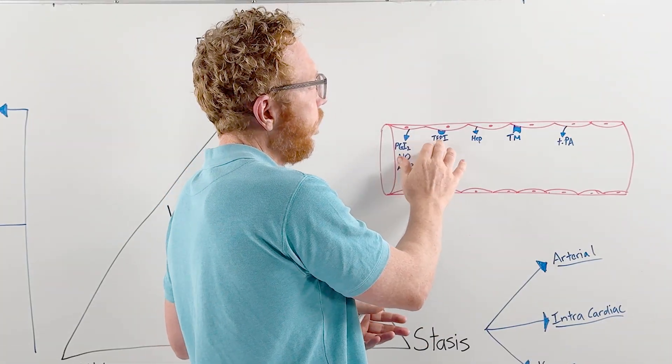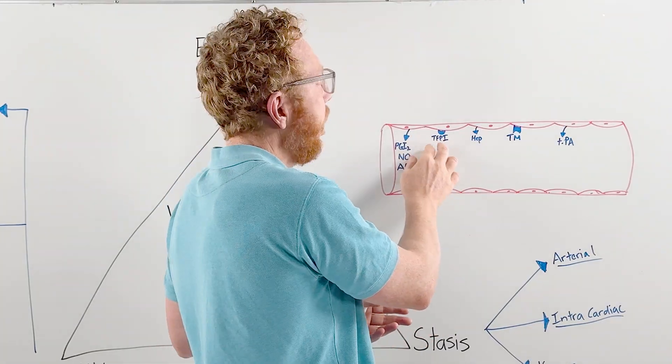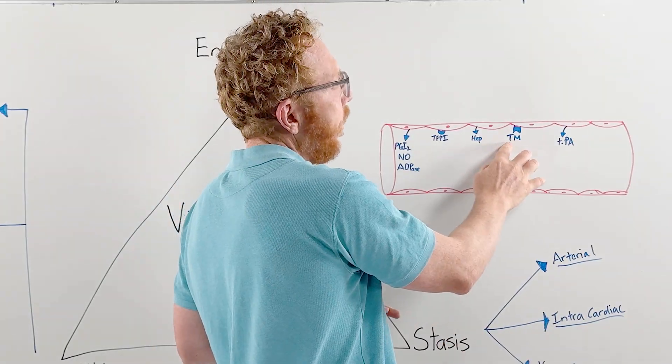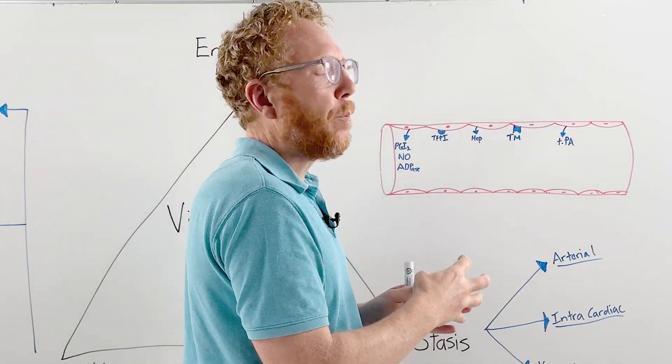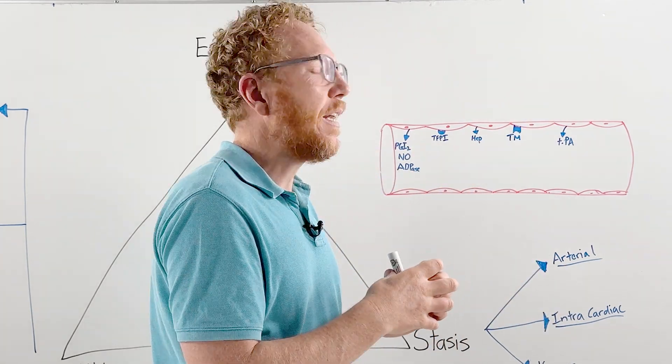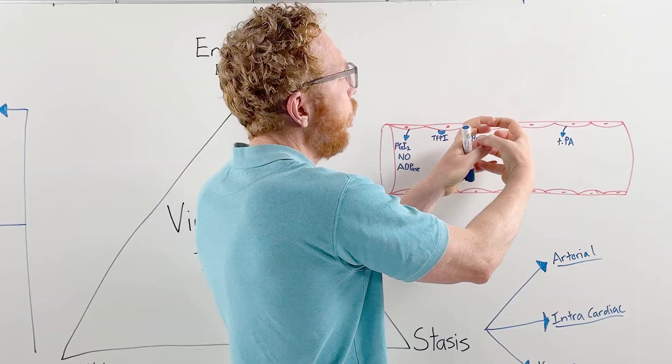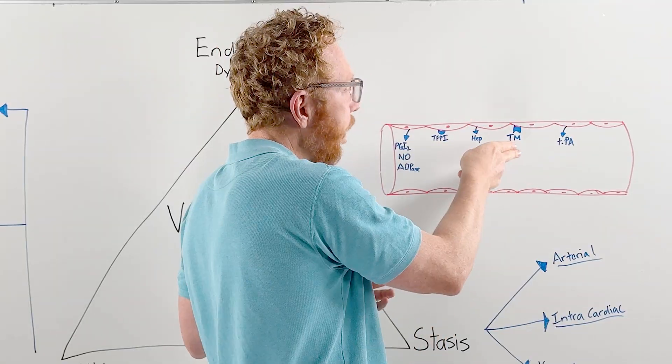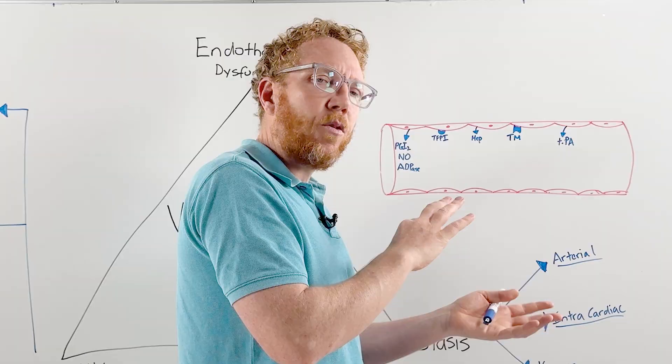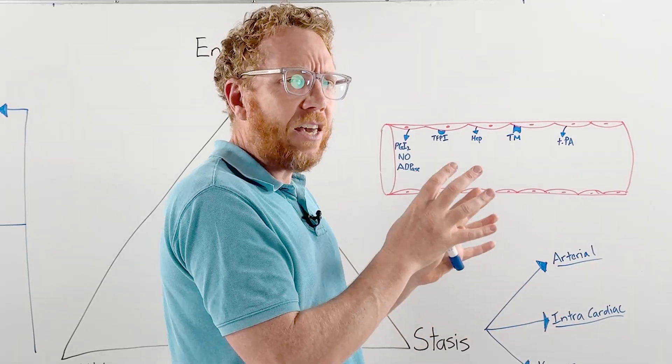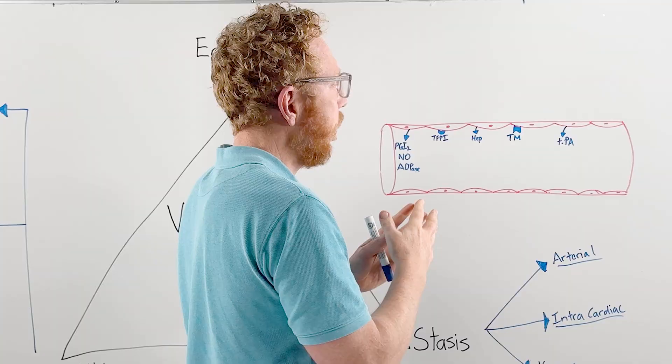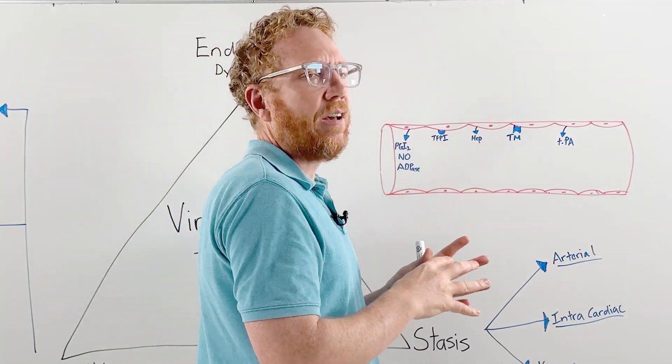Another factor is tissue factor pathway inhibitor, which turns off the extrinsic pathway. Then we have thrombomodulin, which binds with thrombin and then protein C and protein S from the liver. As a whole group, they go around chopping factor 5 and factor 8, which is common pathway and intrinsic pathway.